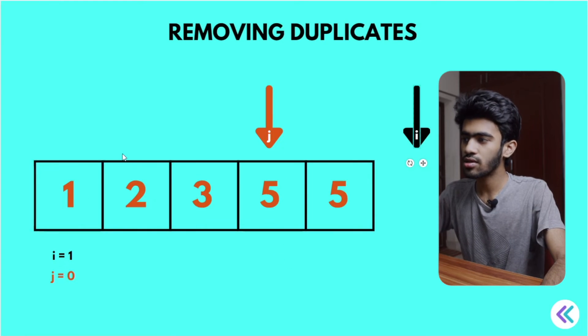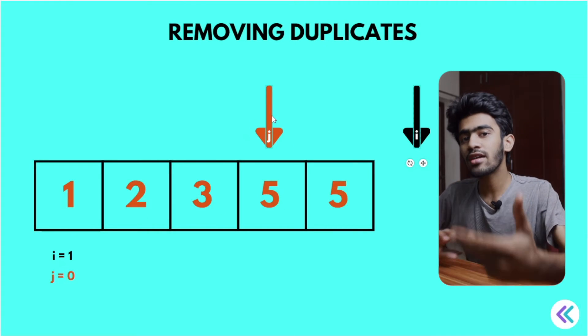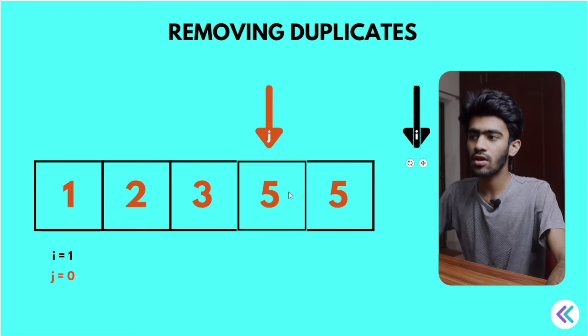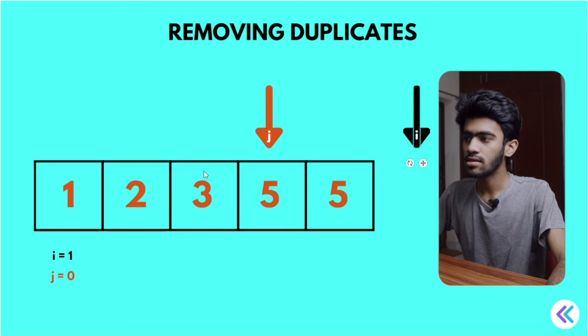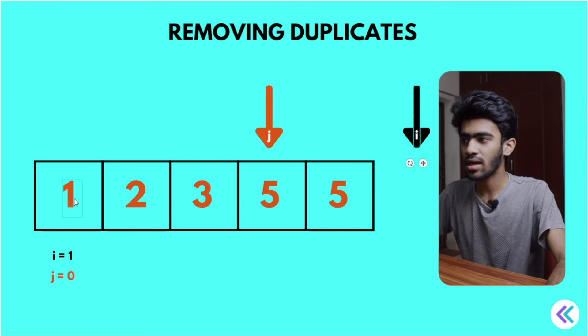So the index is 0, 1, 2, 3, right? So length of this array after duplicates removed is equal to 4. That is 0, 1, 2, 3 plus 1. Okay, length of this array.